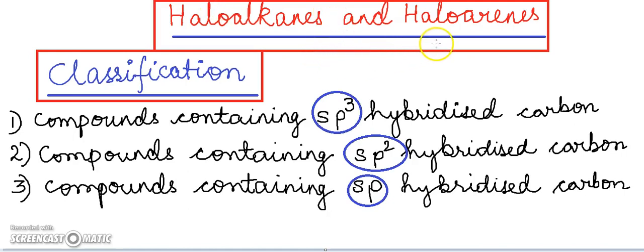Welcome to the chemistry class. Today we will learn about the classification of haloalkanes and haloarenes on the basis of the hybridization present on the carbon atom to which the halogen is attached.